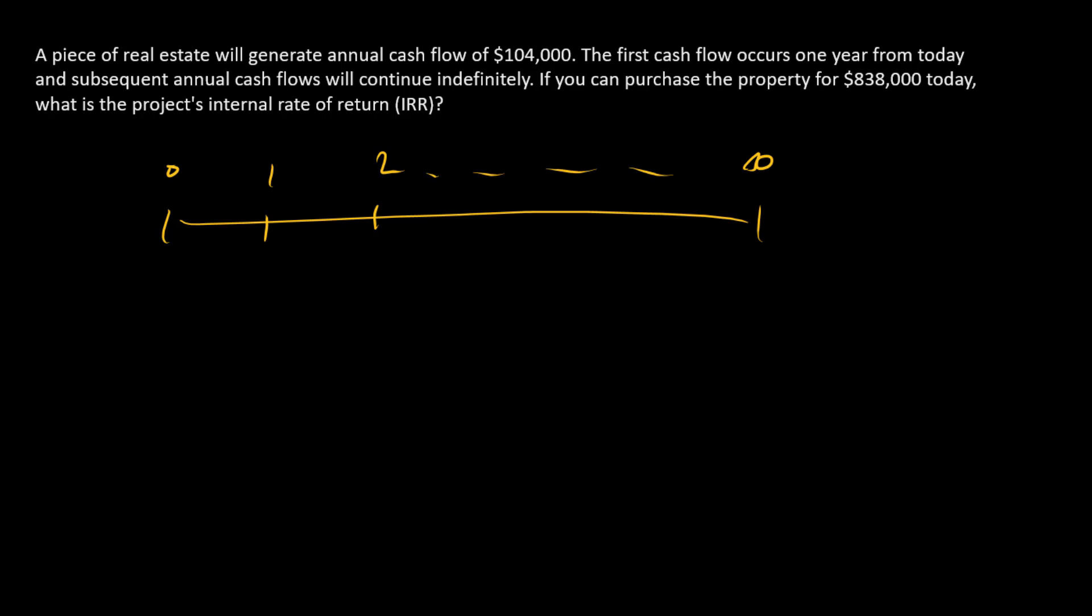I'll write this down in thousands. We've got a minus 838 here upfront, and then a series of 104s forever. And so we recognize this as what? This is a perpetuity.